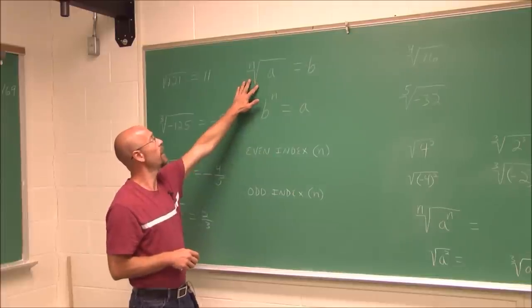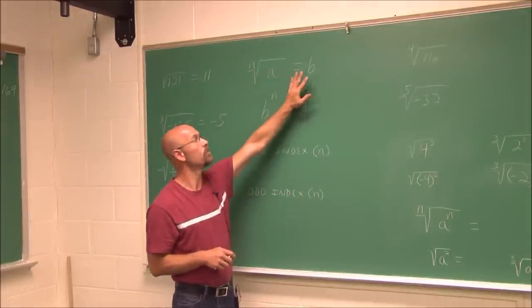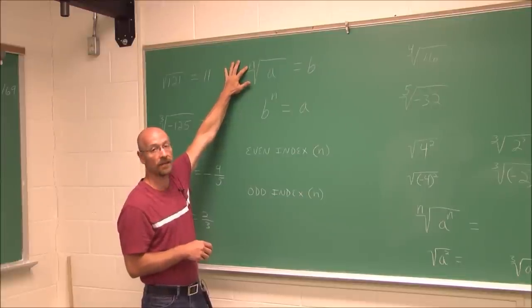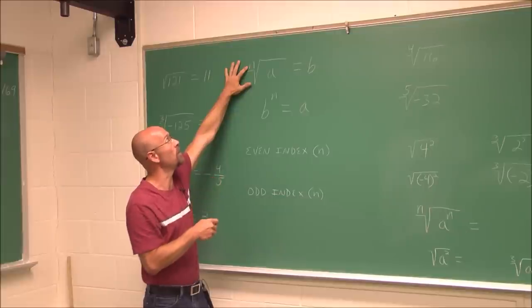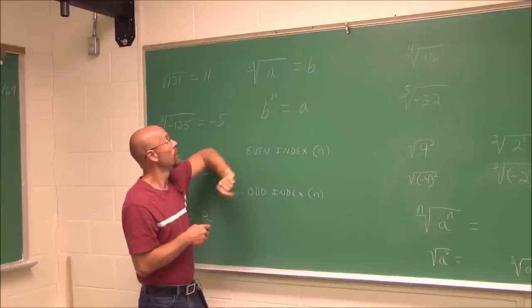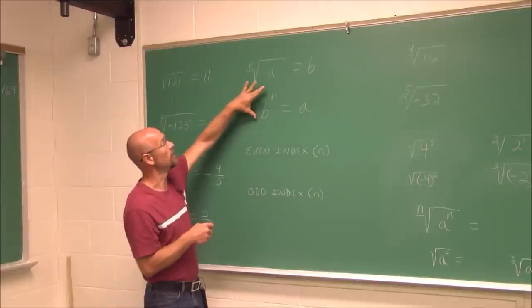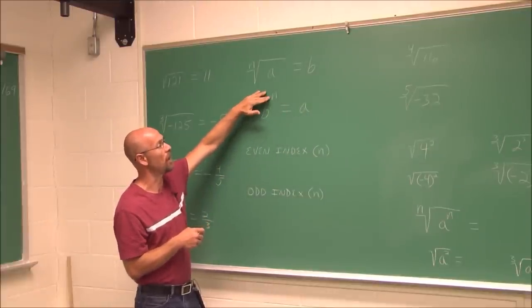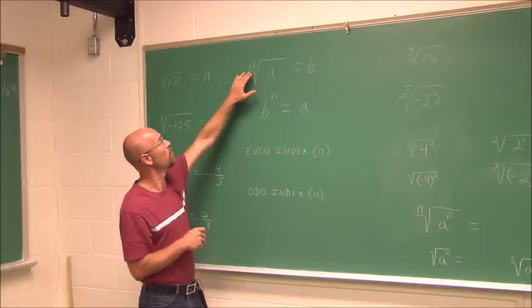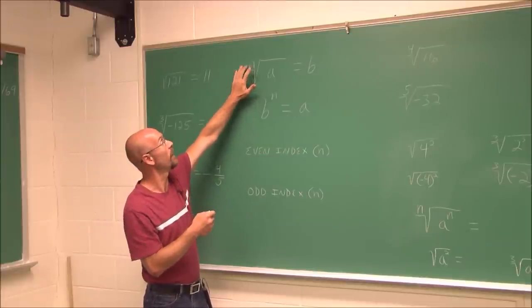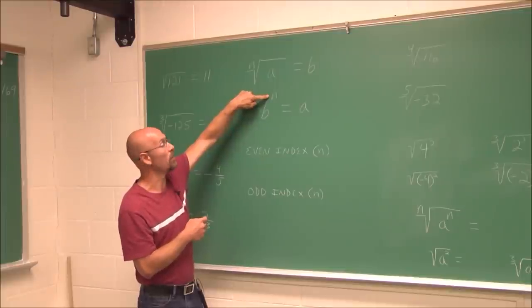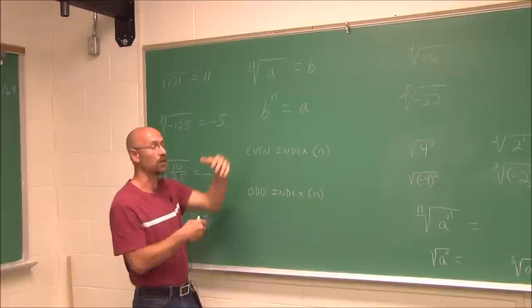Let's define the terminology more precisely. Given the nth root of a equals b, the value n is called the index — it says how many times some number must be multiplied to give the radicand. The radicand is the value under the radical. We also recall from rules of exponents: there's a base, a power, and an argument. Essentially, raising a value to the nth power and taking the nth root undo each other — one operation undoes the other.